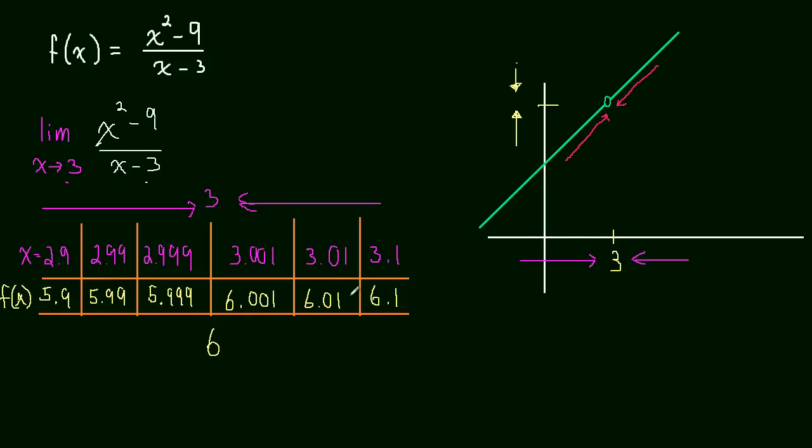6.1, well, 6.01 is closer to 6, and 6.001 is closer to 6. And in fact, if we picked more numbers, like 2.99999, we would get even closer to 6.